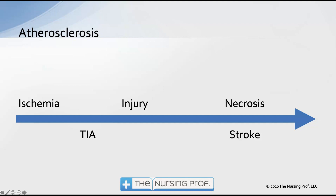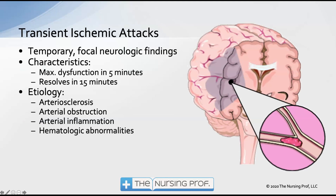The necrotic component will definitely result in long-term dysfunction and stroke. Transient ischemic attacks involve just ischemia or injury. Characteristically, dysfunction lasts about five minutes and usually resolves within about 15 minutes, though we allow up to 48 to 72 hours for symptoms to resolve as other brain areas take over function. There can be long-term damage, so we want to follow up — if there's a blockage, the patient may need dietary changes, medication adjustments, and other interventions to prevent additional injuries.